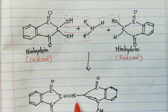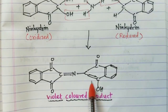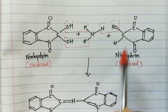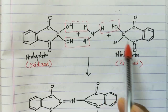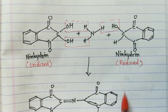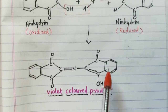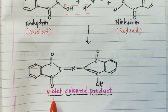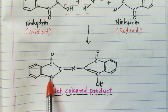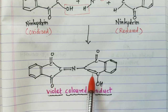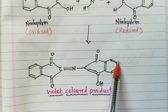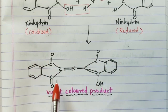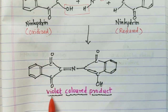In the product, enolization takes place — this part and that part come into conjugation with each other, creating extended conjugation. When extended conjugation is present, the compound is colored. The extended conjugation spans: ring → single bond → double bond → single bond → double bond → double bond → double bond → single bond → ring. This is why the ninhydrin reaction gives a violet colored product.